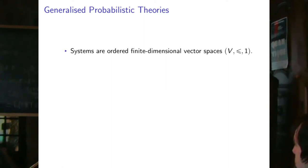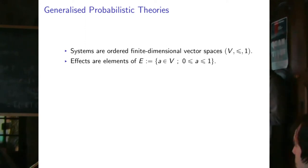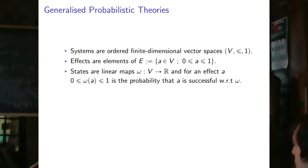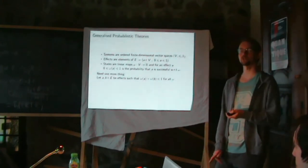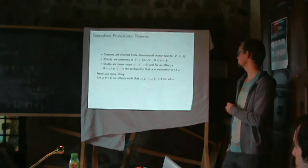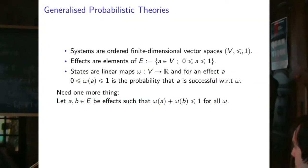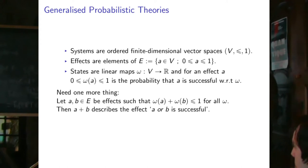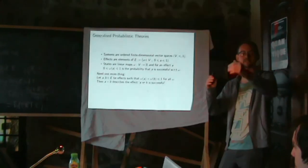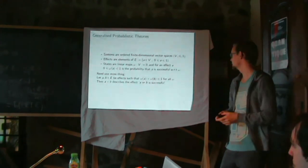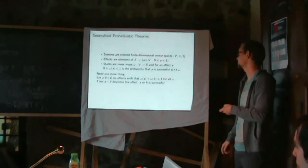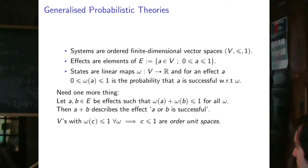The GPTs — systems are going to be order unit spaces, or union spaces. The effects are elements of these spaces, and states are just states. I need the no-restriction hypothesis for effects, which follows from the assumption that if two effects A and B have probabilities summing to at most 1 for any state, then A plus B is an effect. This is a statistical effect you can implement by preparing the state many times, measuring A on one set and B on the other. This makes it an order unit space.